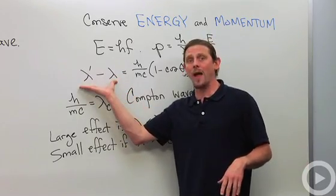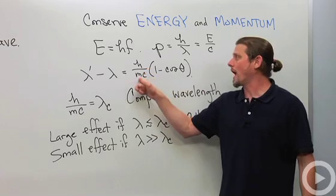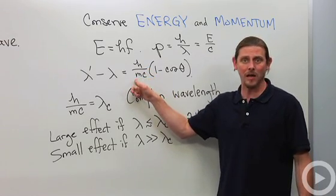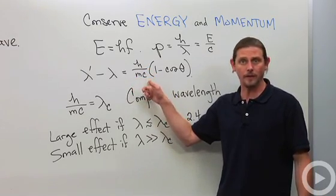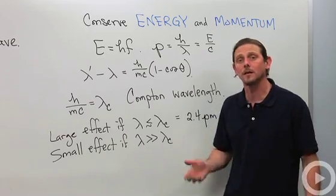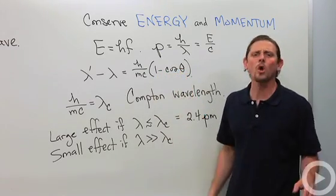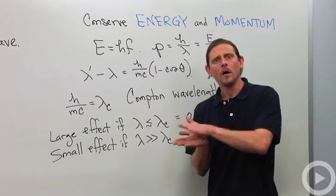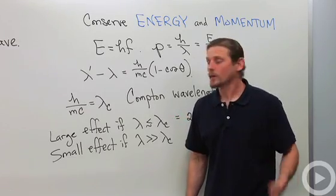So we have a shift in the wavelength, which is given by h over mc. M is the mass of the electron, c is the speed of light, h of course is Planck's constant, times one minus the cosine of the angle that the photon went off at.